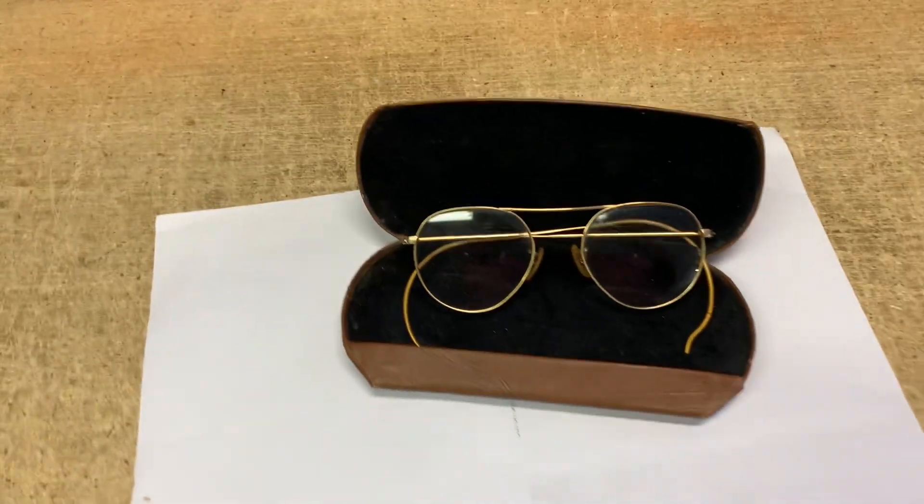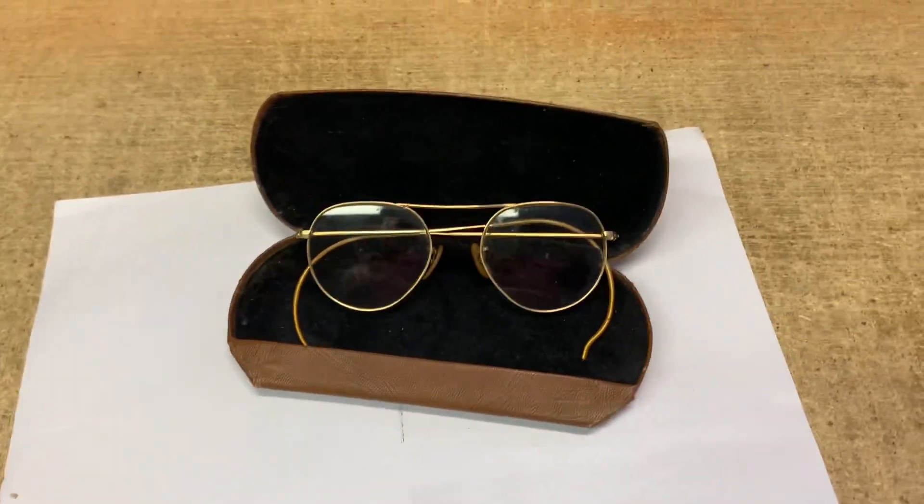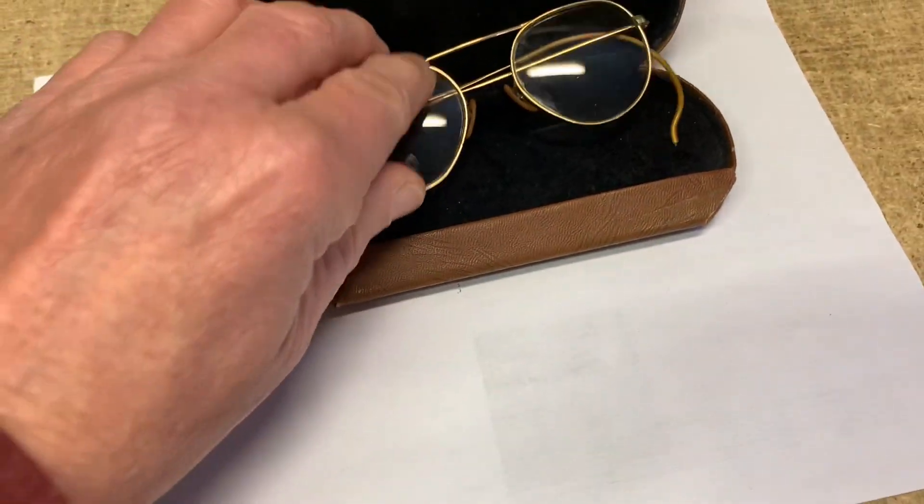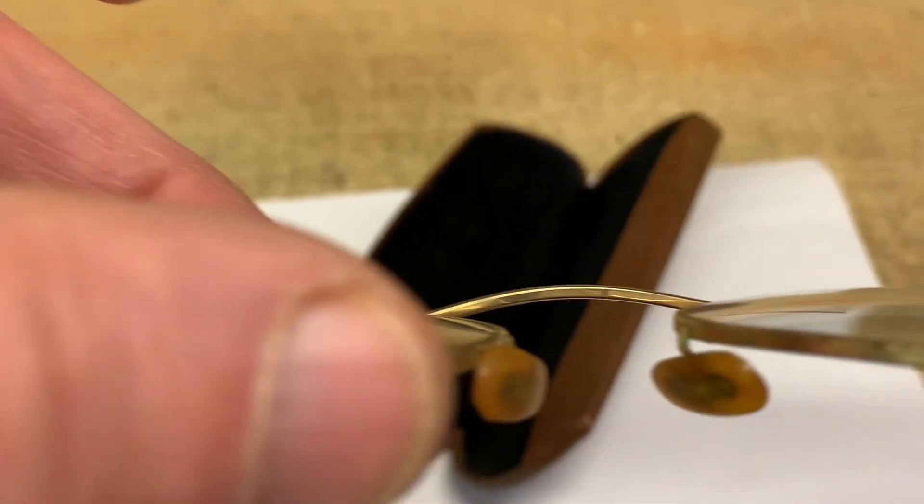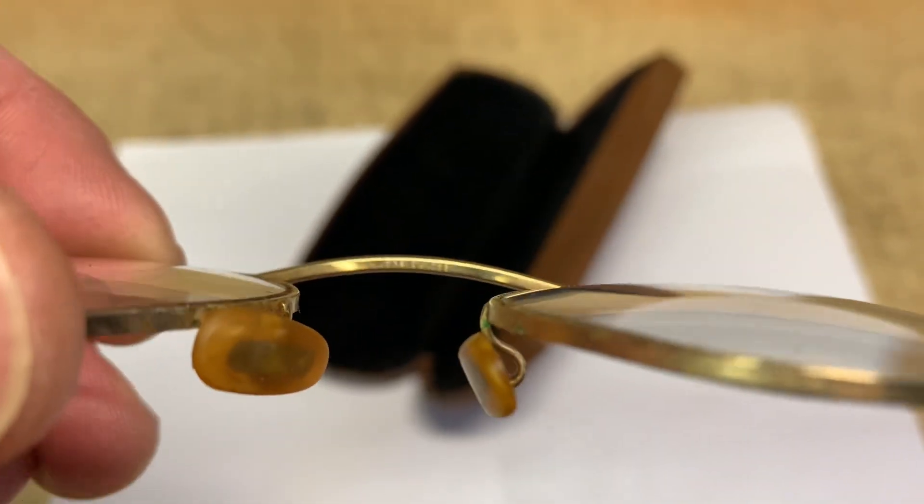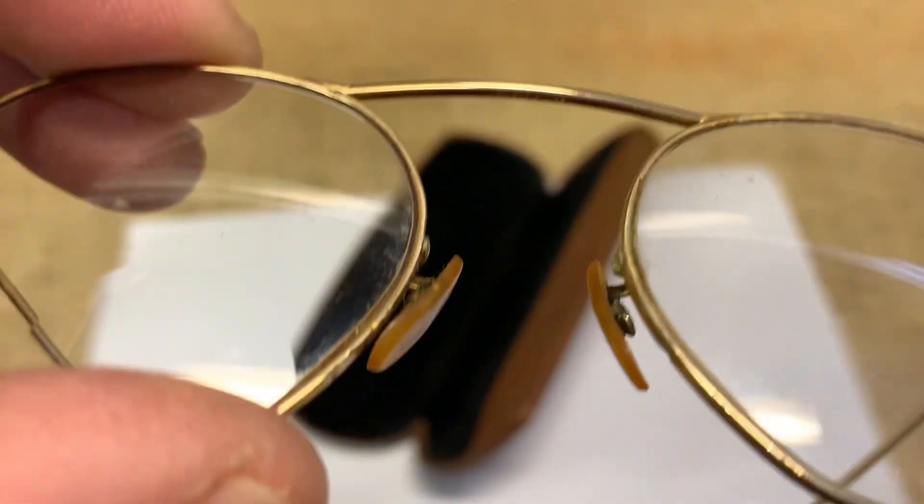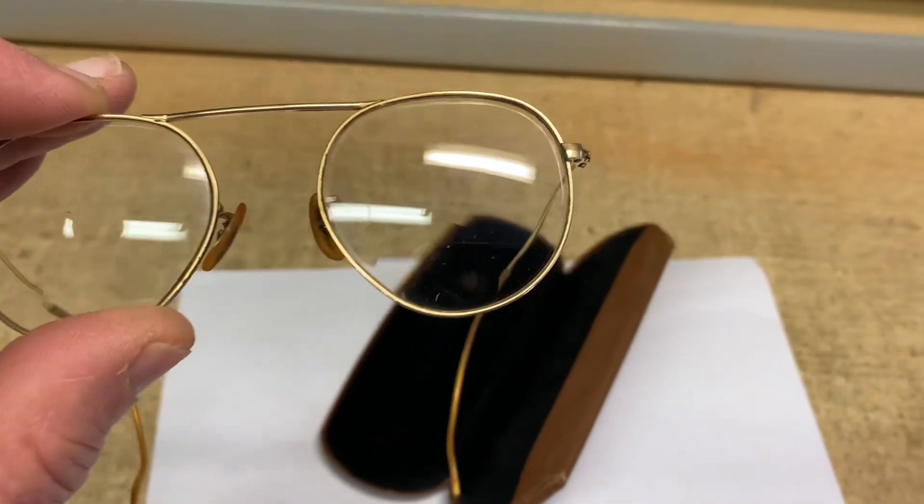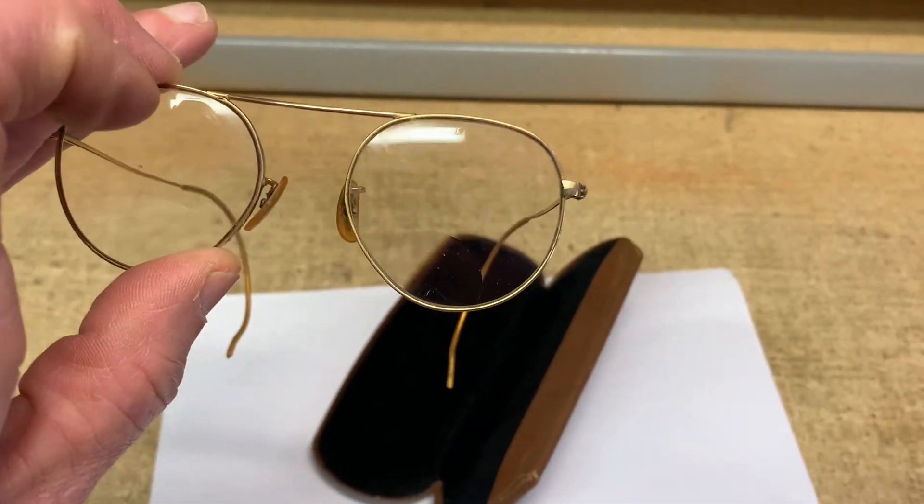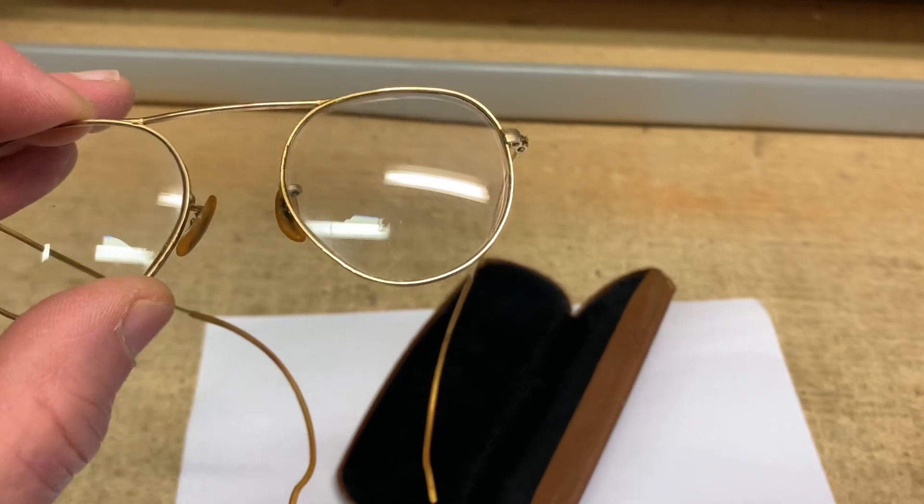This is a pair of vintage eyeglasses, spectacles. These are made by Bosch & Loam. I had to do a very extreme close-up on the bottom of the bridge piece to figure out that they were B&L and 12-carat gold-filled. They actually almost look like a modern shape. Not quite round, almost teardrop.